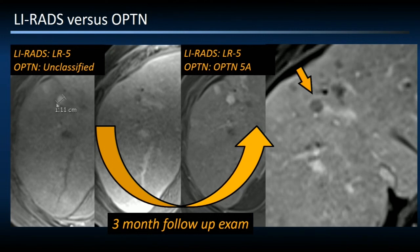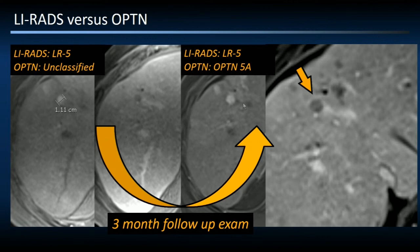Here is a case from our institution illustrating this. We have an 11-millimeter hypervascular mass in the anterior right hepatic lobe. On delayed post-contrast imaging, there is obvious intralesional washout, but no capsule-like enhancement, and no comparison examination to assess threshold growth. By LIRADS, this is an LR5 observation. In the OPTN classification schema, this is unclassified. The patient was followed for three months, at which time the lesion grew to 14 millimeters. It again shows intralesional washout, but now a partial capsule-like enhancement is visible, fulfilling two major criteria. This is now both a LIRADS 5 and an OPTN 5 lesion — coherent at this point.